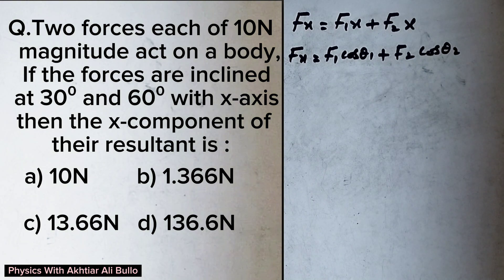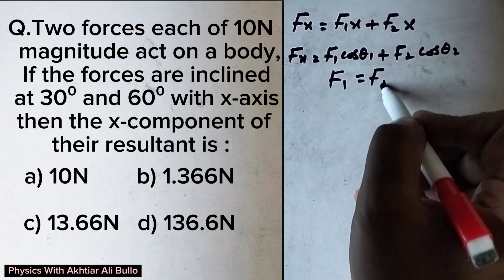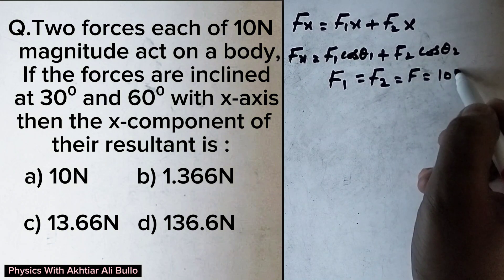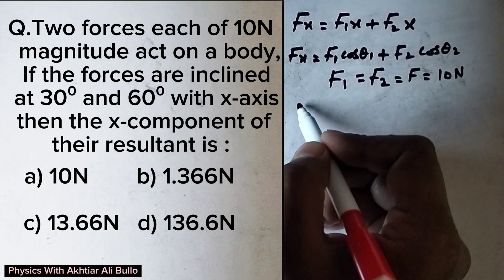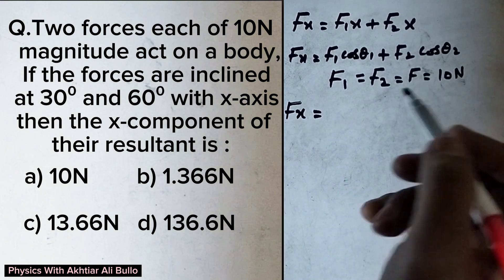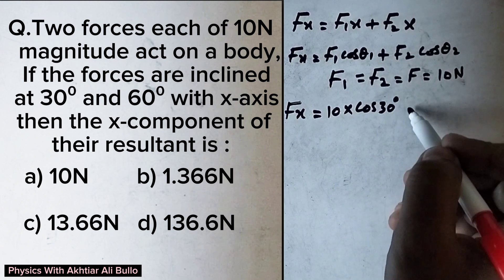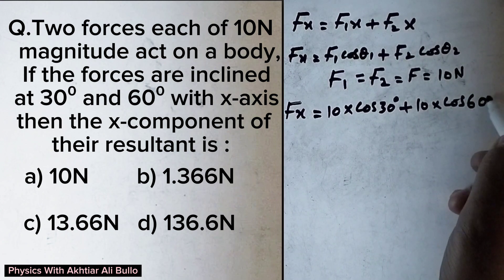Here θ1 is 30 degrees and θ2 is 60 degrees, and F1 is equal to F2 is equal to F, which is given as 10N. So by putting the values, the horizontal component will be 10N·cos30° plus 10N·cos60°.